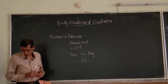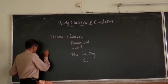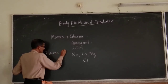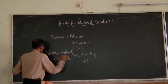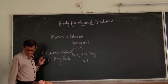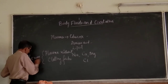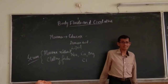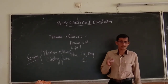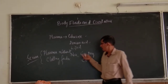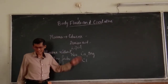Plasma without the clotting factor — that is, without fibrinogen — is called serum. So serum is defined as plasma without the clotting factor. If the clotting factor is absent from plasma, it is not considered plasma; it is considered serum.